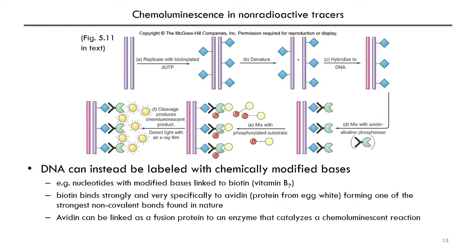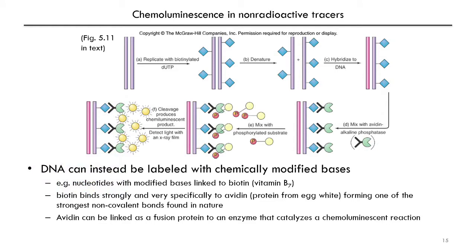In this example, we're generating a hybridization probe with chemically labeled DNA. This DNA from which you want to make a probe, you would replicate with modified nucleotides — biotinylated nucleotides in this example. If you were doing this with radioactive labeling, you might replicate this DNA with radioisotopically labeled nucleotides. But in this case, you use chemically modified nucleotides where a biotin group is attached, and then you generate a probe that has biotin groups attached to it.